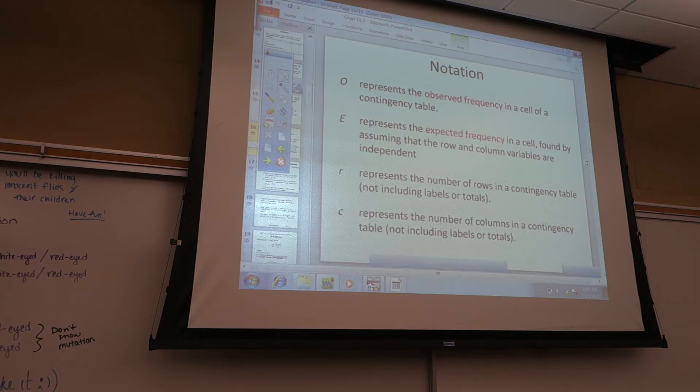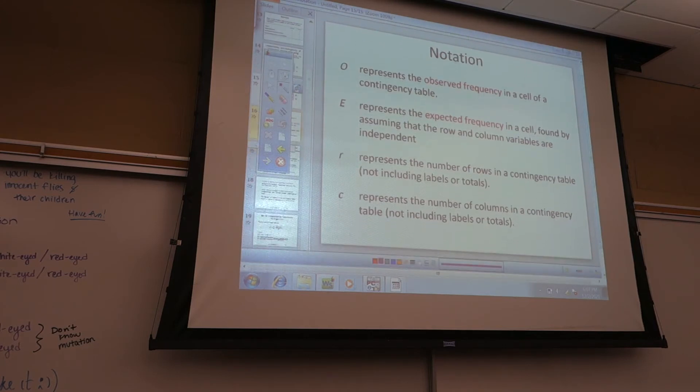Okay, here's some notation. Noor, go ahead and read for me. O represents the observed frequency in the cell of a contingency table. E represents the expected frequency in the cell formed by assuming that the row and column variables are independent. R represents the number of rows in the contingency table, not including labels or totals. So do not include the labels or the totals when you figure out the rows and columns.